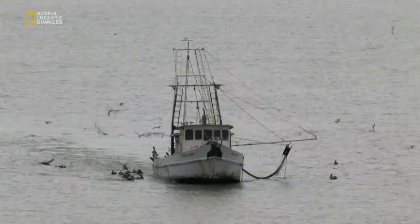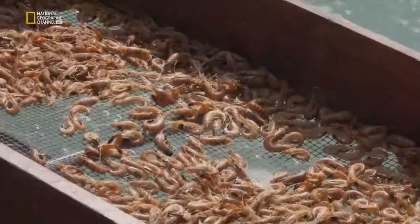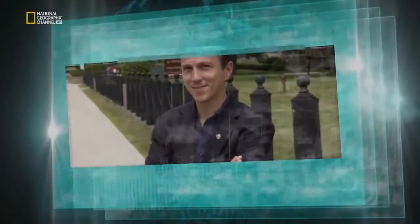One of the most abundant creatures in the ocean has hidden properties that could save millions of lives each year. Shrimp exoskeletons contain a natural binding agent.